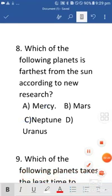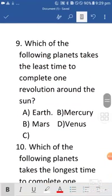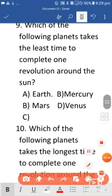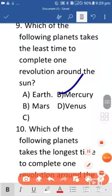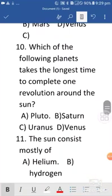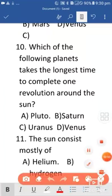Next is which of the following planets takes the least time to complete one revolution around the sun? So that is option B, Mercury. Next is which of the following planets takes the longest time to complete one revolution around the sun? So option A is the right answer, that is Pluto.